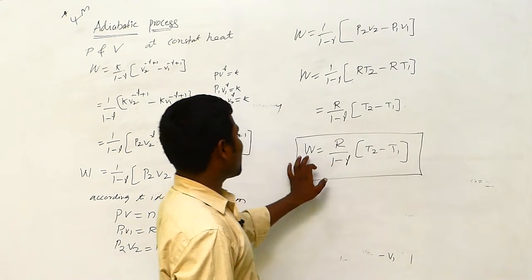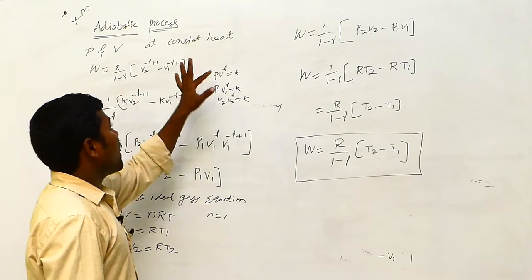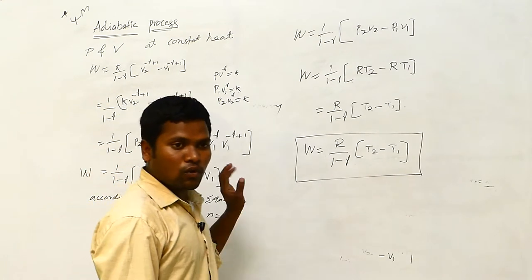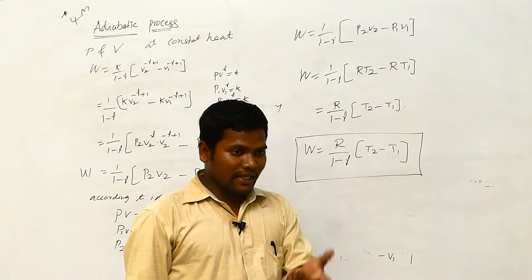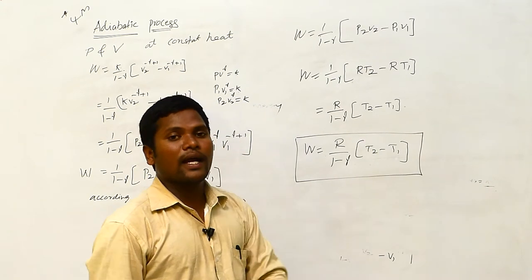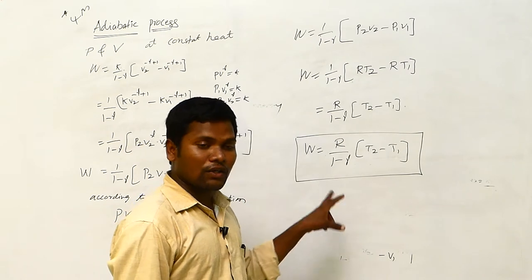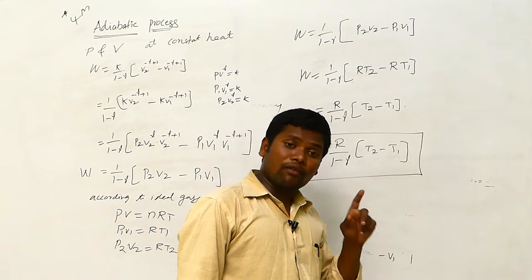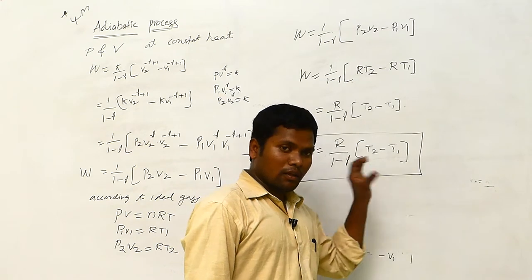You calculate and you will get W — the work done in the adiabatic process. In the exam, you will get a four-mark question: define the adiabatic process and derive the equation for work done. You have to derive those equations and finally get W = R by (1 minus gamma) into (T2 minus T1).